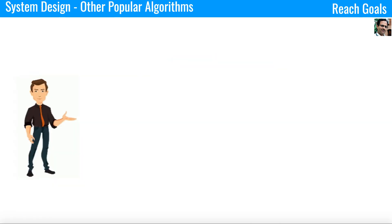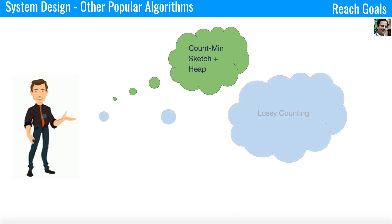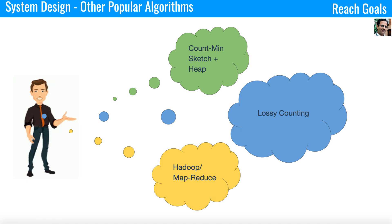There are many popular algorithms that can be applied in this system design: Count Min Sketch plus Heap, Lossy Counting, and Hadoop or MapReduce. Discussing the algorithms in detail is beyond the scope of this video, and I will cover them in different videos. There are also many interesting videos about these algorithms on the internet.